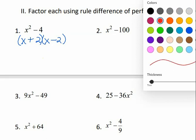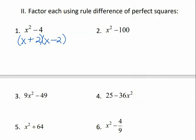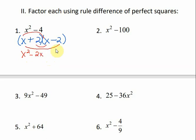Let's check it to prove this is correct. Any time we factor, we can check our answers by multiplying our factors back together — we should get what we started with. Since we have two binomials, we FOIL them. The first terms give x squared. The outer terms give negative 2x. The inner terms give positive 2x. The last terms give negative 4. When we combine like terms, the middle two terms cancel out and we're left with x squared minus 4, which is what we started with. Our answer is correct.